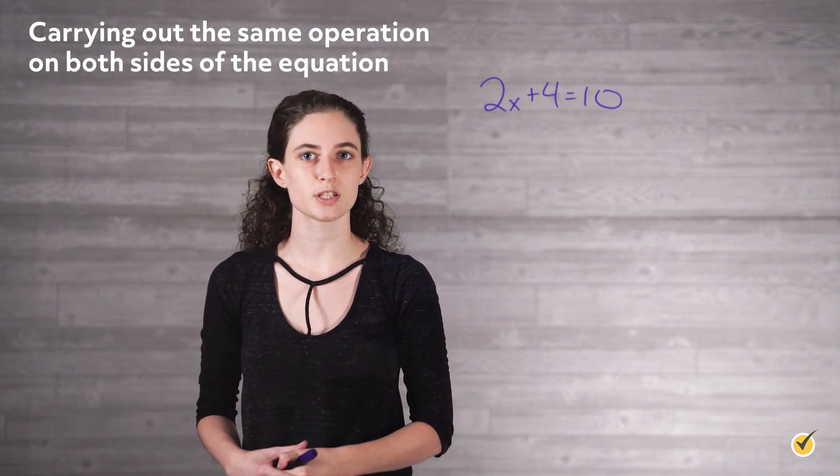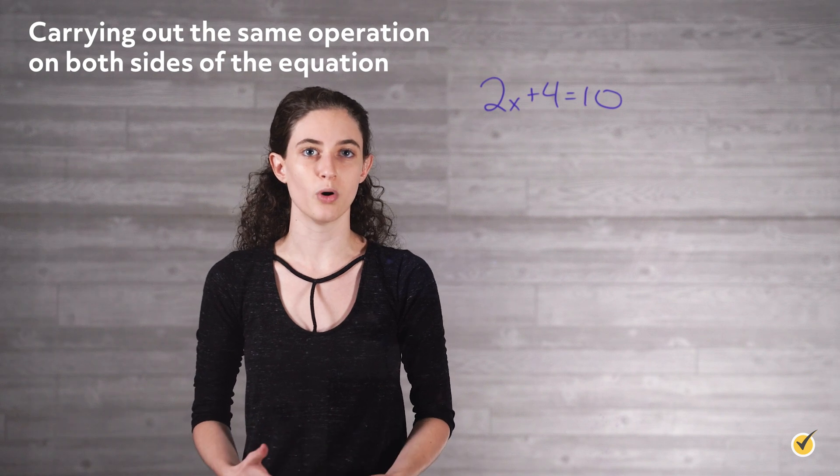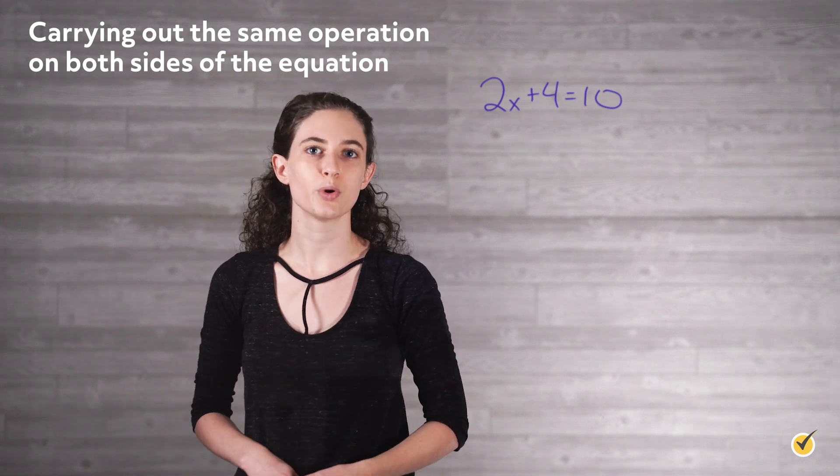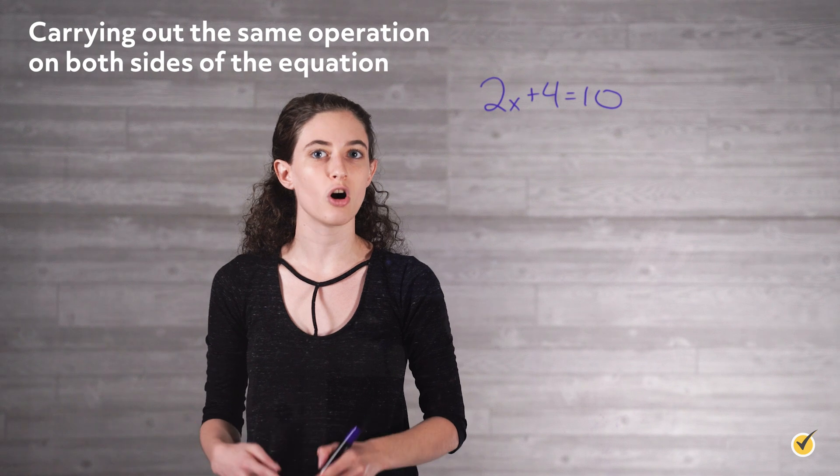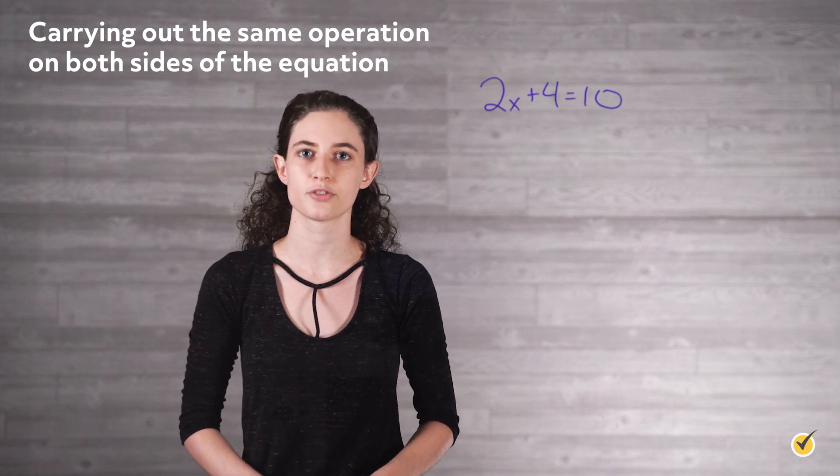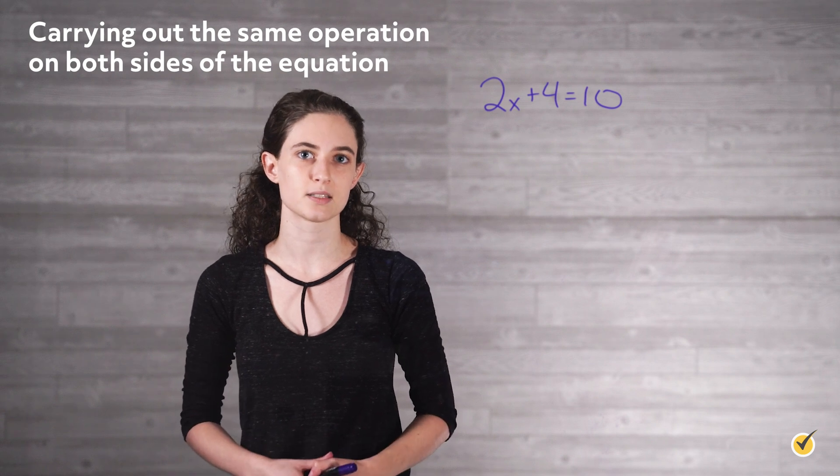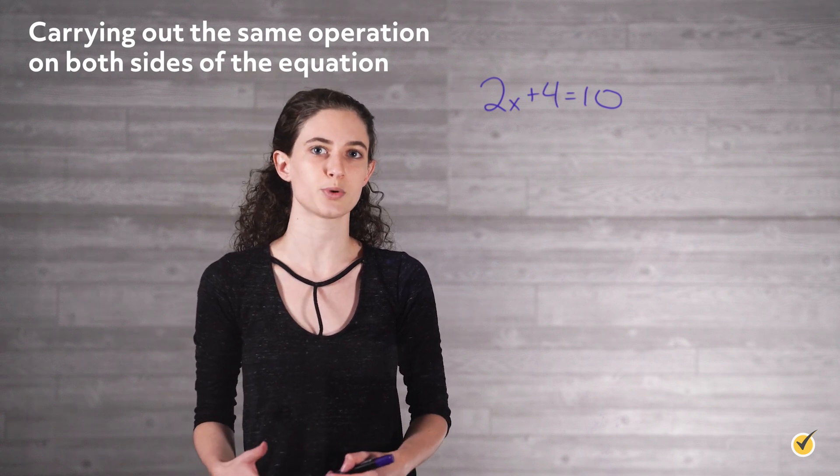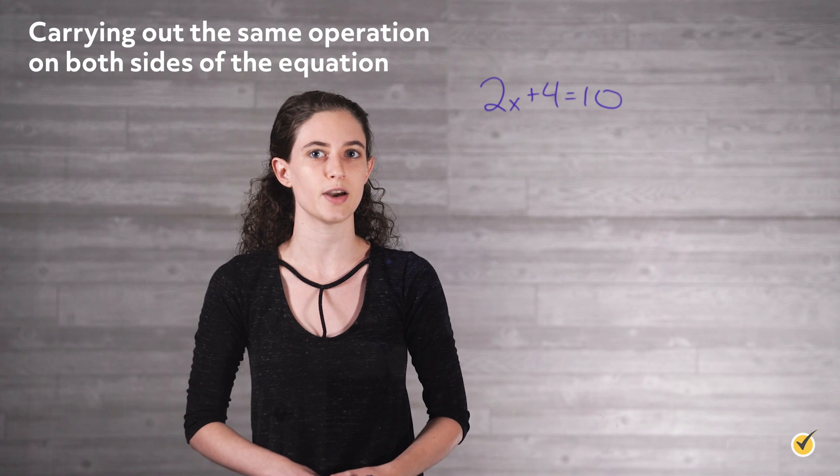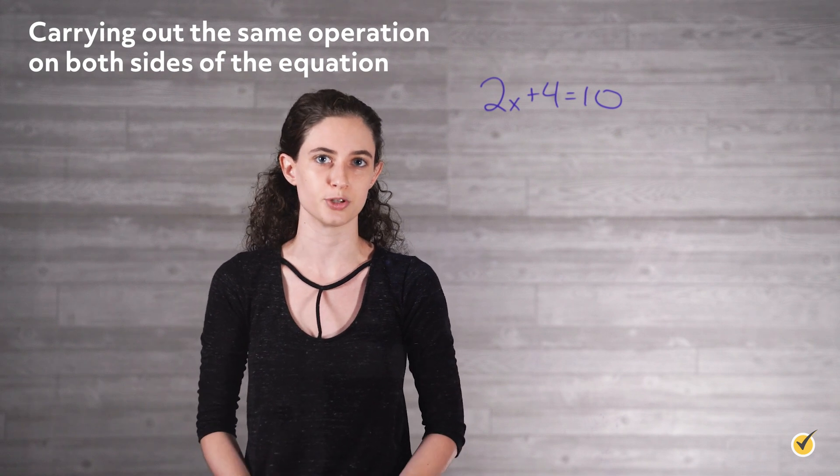Since the two expressions on either side of the equal sign are in fact equal, we can use any operation we want on one expression as long as we do the exact same thing to the other expression. This is generally known as keeping equations balanced. It produces equivalent expressions and does not change the value of x that makes the original statement true.